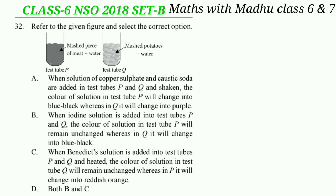Now question 32. Refer to the given figure and select the correct option. The correct answer will be option B. Potatoes are rich in starch, and starch gives blue-black color with iodine. Meat is rich in proteins and proteins give purple color on adding copper sulfate and caustic soda. When iodine solution is added into test tubes P and Q, the color of solution in test tube P will remain unchanged whereas in Q it will change into blue-black.